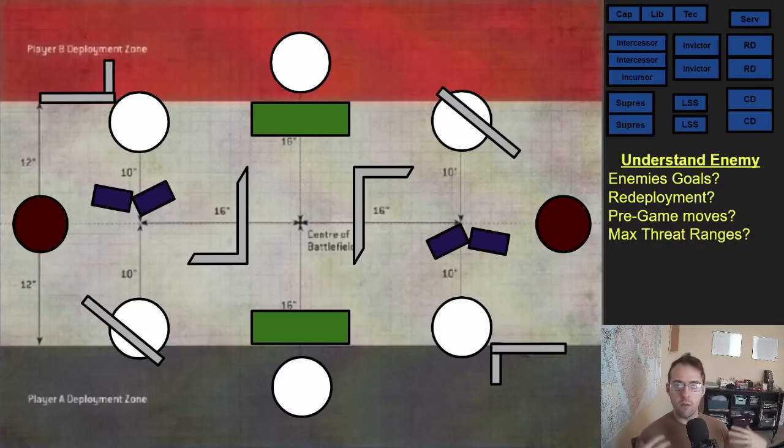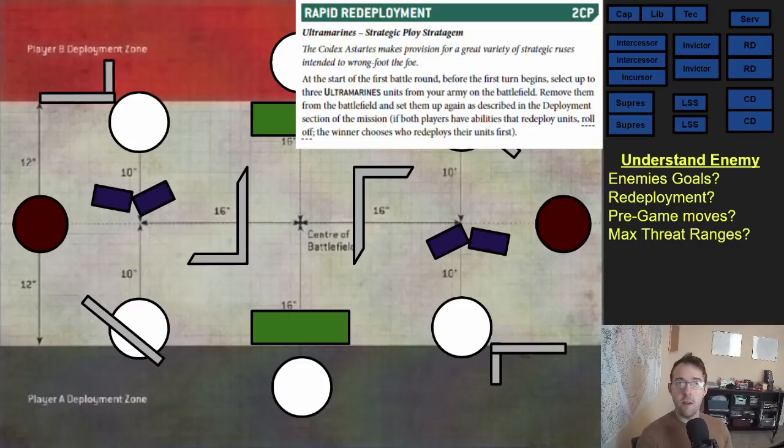To understand our enemy we first have to understand their goals. What type of secondaries are they going to be taking? Are they going to be staying in their deployment zone or are they going to try to push out into yours? Do they need to stay together to get all their buffs or can they be really spread out? Every single game I ask my opponent the same three questions. The first one is do you have any ability to do redeployments?